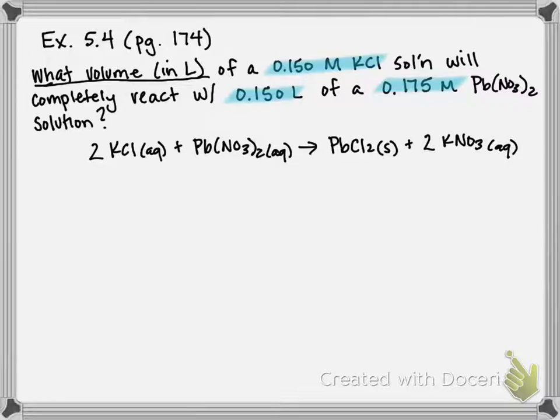So when you're starting these types of problems, I always start with a thing that I know more about. I have two numbers associated with lead nitrate, and I typically want to start with my volume. So one of the numbers I know about lead nitrate is its volume. Ultimately, we're looking for volume of our KCl. So to start off, I'm going to say I have 0.150 liters of my lead nitrate.